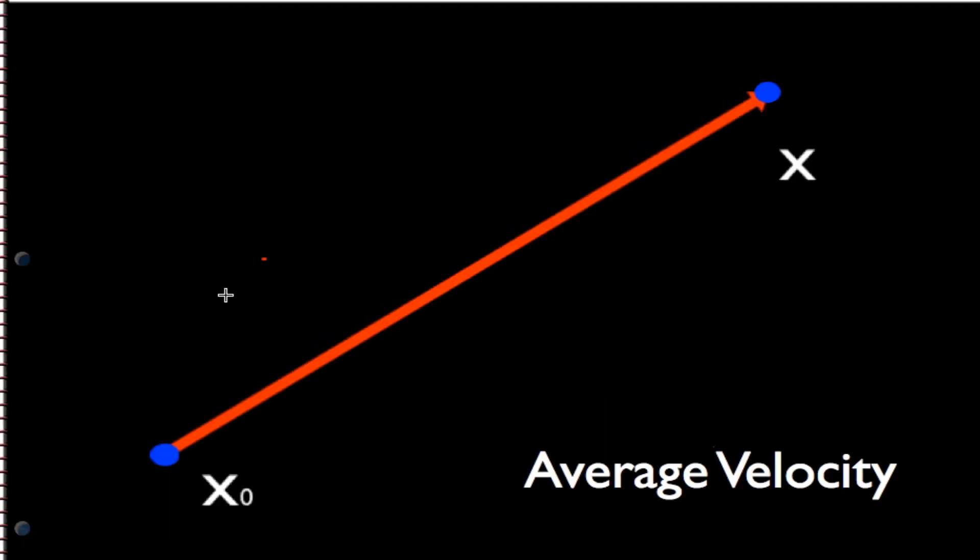Displacement is a vector. The other important vector quantity in this unit is average velocity. That's simply the displacement over the time. And because displacement has a direction, that means average velocity does too.